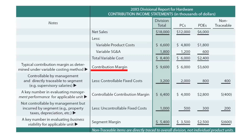The contribution margin, remember, is sales minus all variable cost, whether it's variable product cost or variable SG&A. From that amount, we'll subtract controllable fixed cost — that is, costs that are controllable by management of that segment and directly traced to that segment, such as the supervisor's salary within the segment.